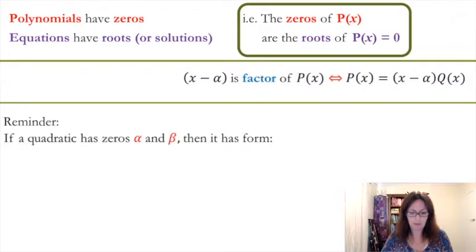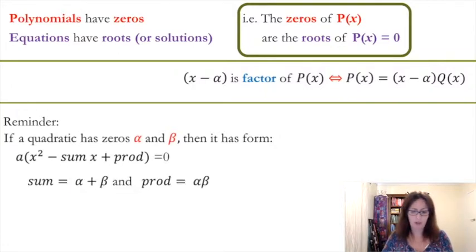And a reminder, if a quadratic has zeros alpha and beta, then it has form a quadratic like this with a up front and it's subtract the sum of x plus the product. Where the sum is the sum of those two zeros, alpha and beta, and the product is them multiplied together.